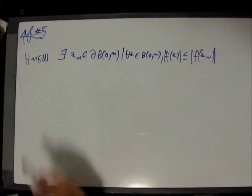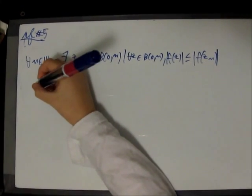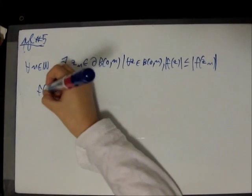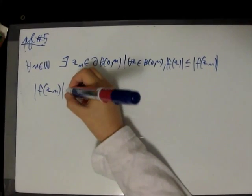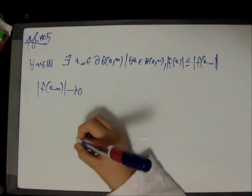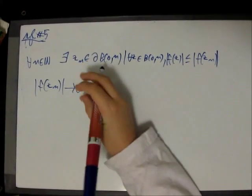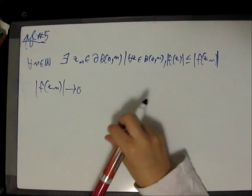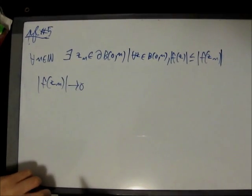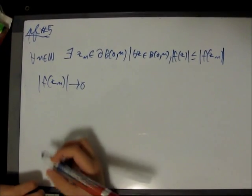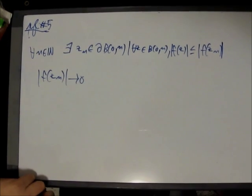Now, if we let N go to infinity, we know that the modulus of F of Z sub N goes to 0. But, this is the maximum of the function in the balls, which are getting bigger and bigger when N goes to infinity. So, we conclude that F of Z is 0 for all Z, which is a contradiction.